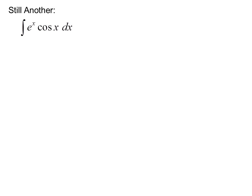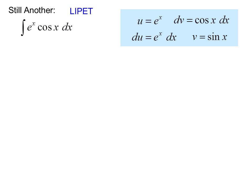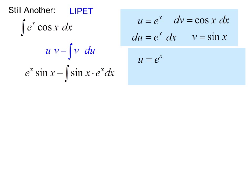Another example: the integral of eˣ cosine x dx. LIPET tells us that exponential comes before trig, so we let u equal eˣ and dv equals cosine x dx. So du equals eˣ dx and v equals sine x, because the antiderivative of cosine x is sine x. Using the formula, we get eˣ sine x minus the integral of sine x times eˣ dx. We're still taking the integral of a product, so we apply integration by parts again. We let u equal eˣ, dv equals sine x dx, du equals eˣ dx, and v equals negative cosine x.